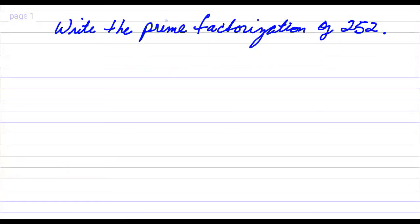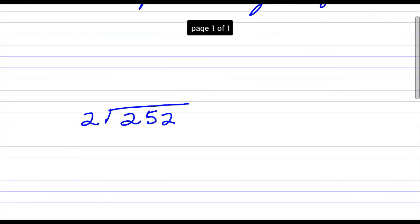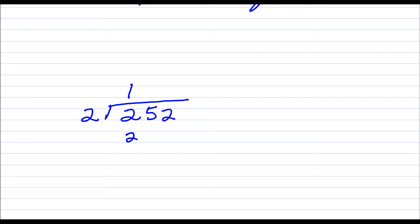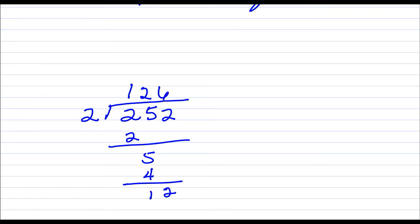We're going to find the prime factorization of 252. 252 is divisible by the first prime number, 2. That's 126. 126 is also divisible by 2, so half of 126 is 63.